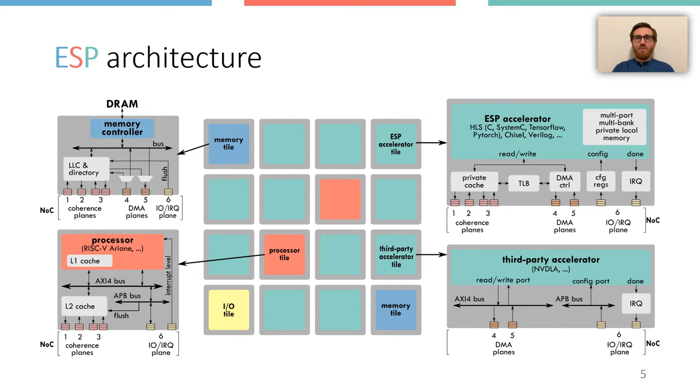In addition, there is an auxiliary tile like the yellow one for peripherals like UART or Ethernet or for system utilities like the interrupt controller. Each tile is encapsulated into a modular socket that interfaces it to a network-on-chip, which has a 2D mesh topology with multiple physical planes.